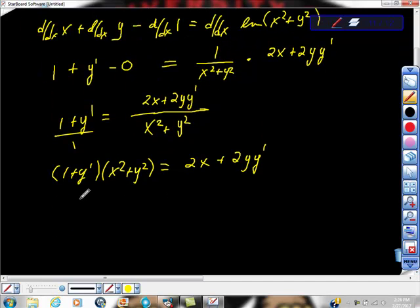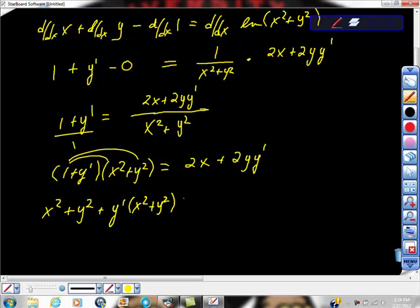Hopefully you're keeping up with all this algebra. I'm going to partially expand this. I'm just going to expand this part of it. So I'm going to get 1 times x squared is x squared, 1 times y squared is y squared, and then y prime times x squared plus y squared. In here I'm thinking about the fact that the point I'm going to use is (1, 0).